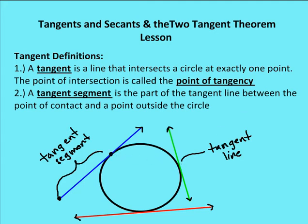I can draw a point for the green line and the circle — that's a point of tangency — and also a point of tangency for the red line and the circle. A tangent segment is the part of the tangent line between the point of contact, let's say point A, and the external point, point B. Tangent segments can be on either side of the point of tangency. A tangent line has one point of contact with the circle, while a tangent segment includes the point of tangency and another point outside of the circle on the tangent line.